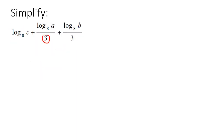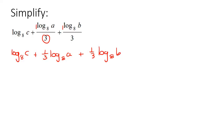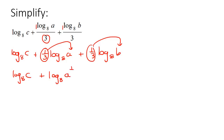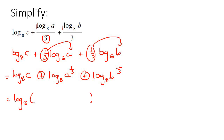Here's the next one. These (1/3)s need to go back as exponents. So that's going to become log₈(c^(1/3)) plus log₈(a^(1/3)) plus log₈(b^(1/3)). These are all plus, so the opposite for logs is multiply: log₈(c^(1/3) × a^(1/3) × b^(1/3)).